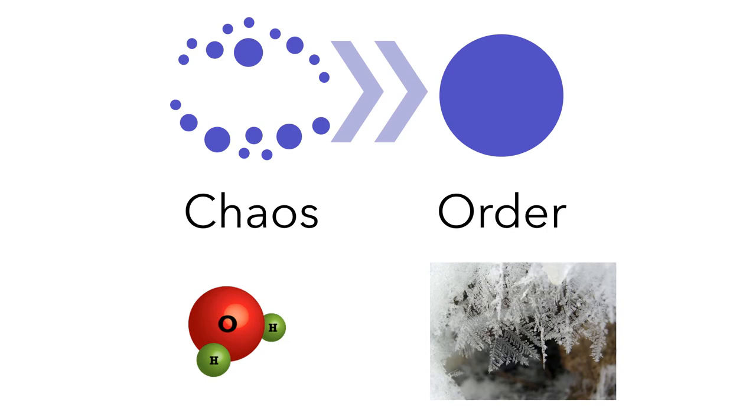The same phenomenon has different names in different disciplines. Mathematicians call it the emergence of a giant component. Physicists call it percolation. It is a phase transition that is similar to the moment in which water freezes.